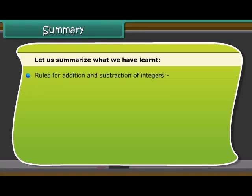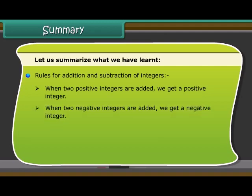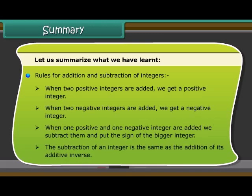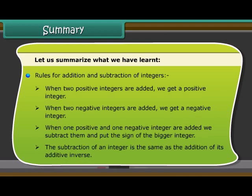Rules for addition and subtraction of integers. One: When two positive integers are added, we get a positive integer. When two negative integers are added, we get a negative integer. When one positive and one negative integer are added, we subtract them and put the sign of the bigger integer. The subtraction of an integer is the same as the addition of its additive inverse.